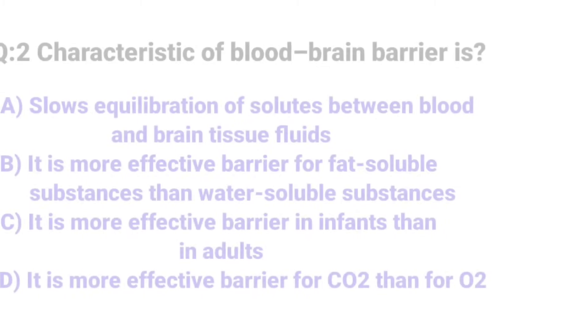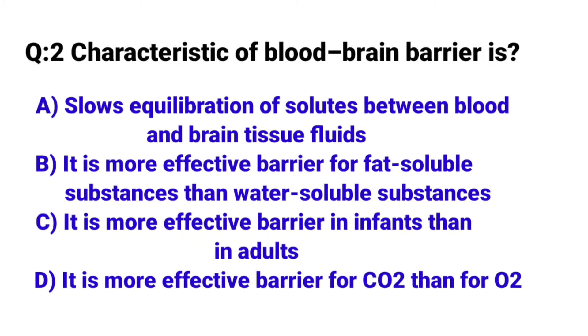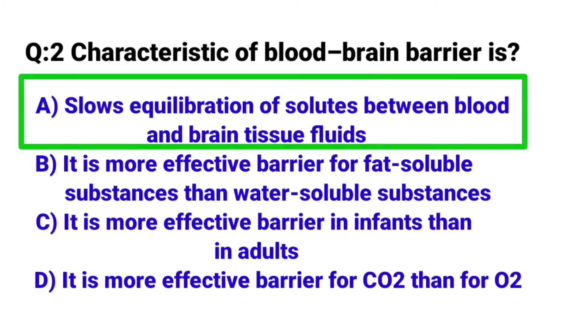Question Number 2: Characteristic of Blood-Brain Barrier. Correct answer is Option A: Slows equilibration of solutes between blood and brain tissue fluids.